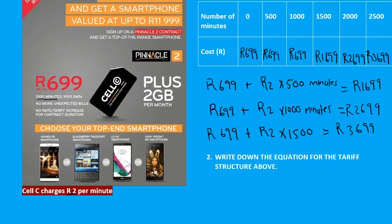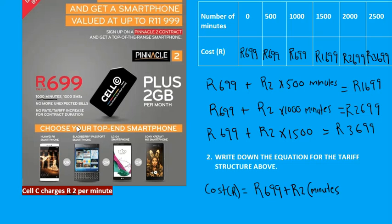For question two, we are asked to find the cost equation for the tariff structure. The cost in rands equals R699 — which is fixed and must be paid no matter what — plus R2 per minute for the minutes that exceed the 1000 free minutes. So the equation is: Cost = 699 + 2(minutes − 1000).